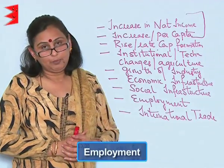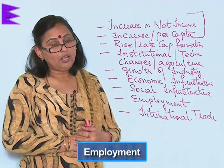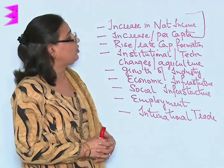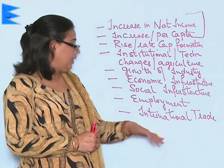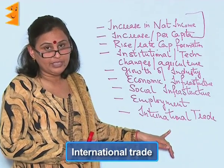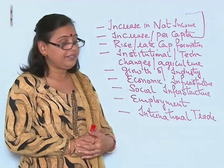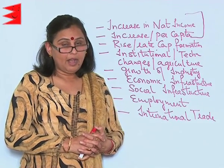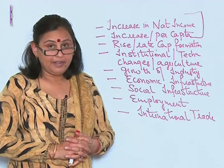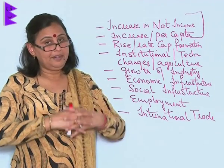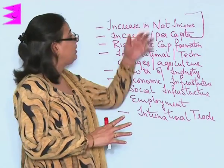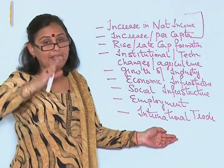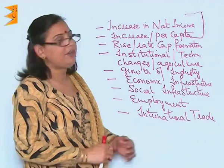Employment has been generated at a good speed because of the growth of industries, agriculture, infrastructure, and capital formation. International trade has also seen a big rise — before independence there was hardly any trade between India and other countries, but now there is great trade going on between India and the rest of the world. These are the achievements of the goals which economic planning had set for itself before 1991.